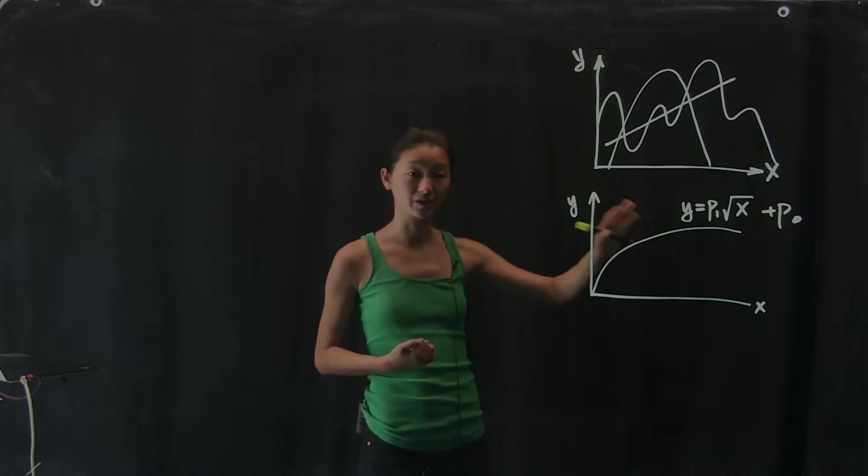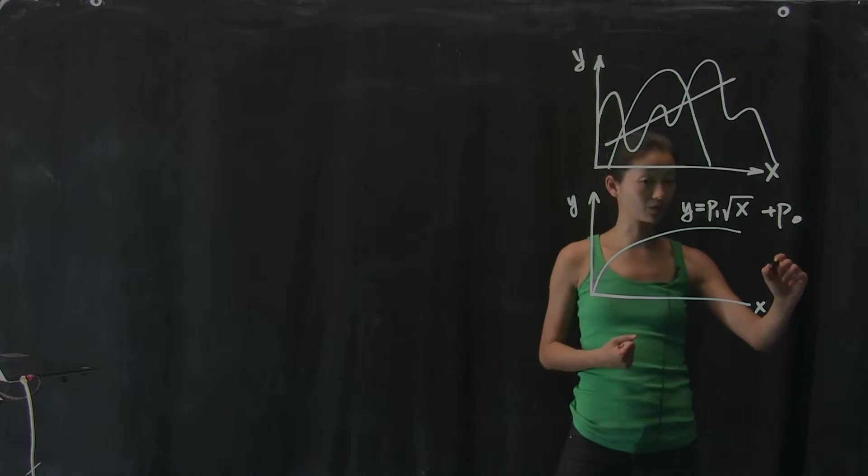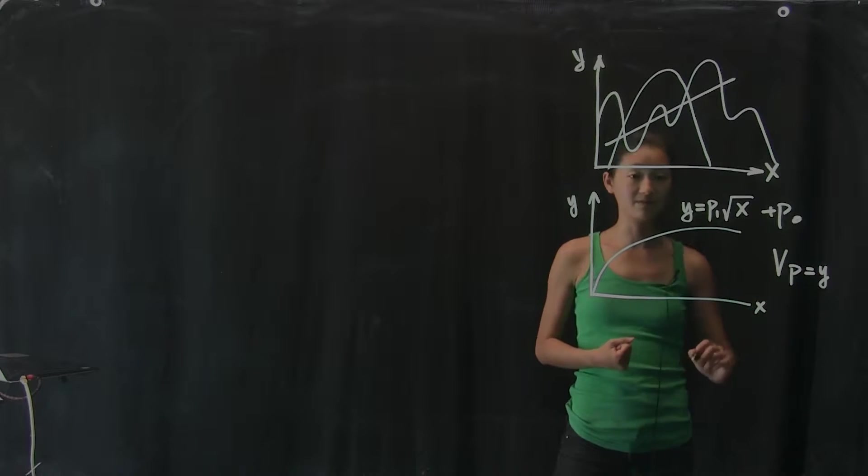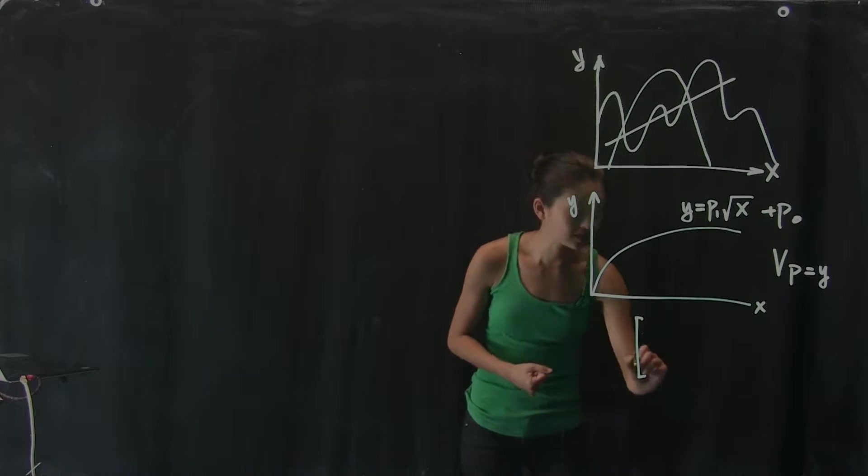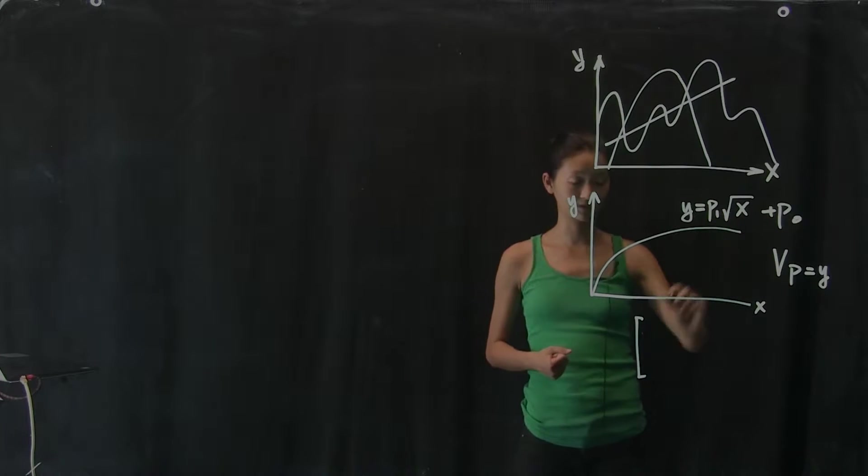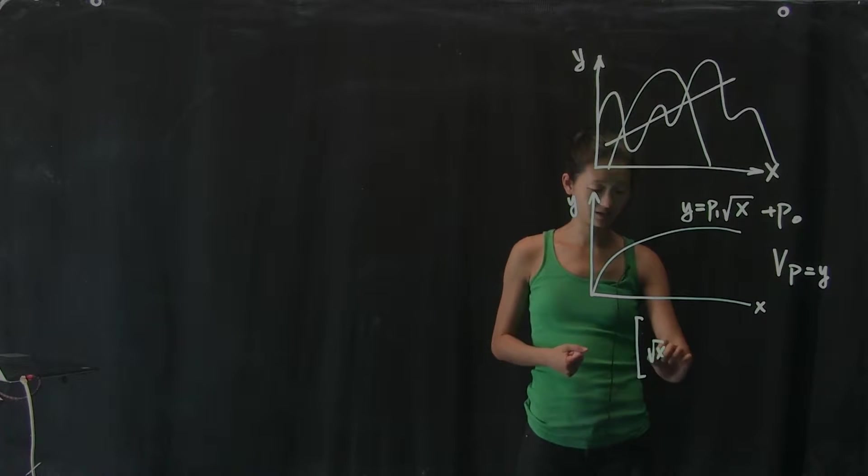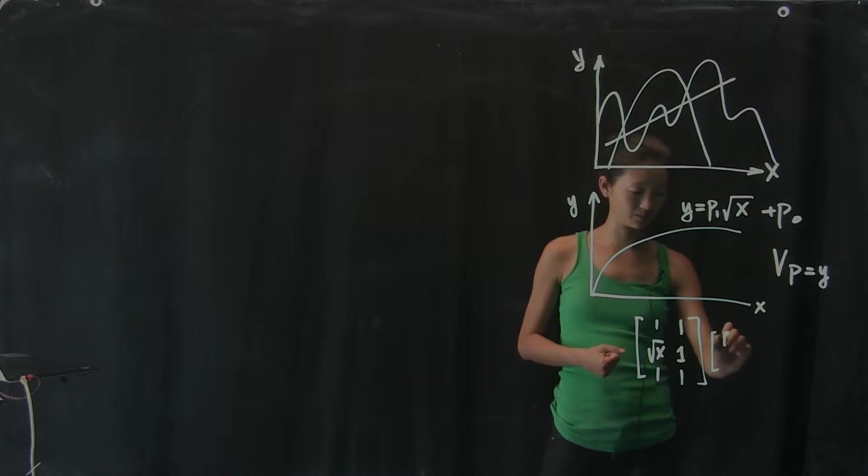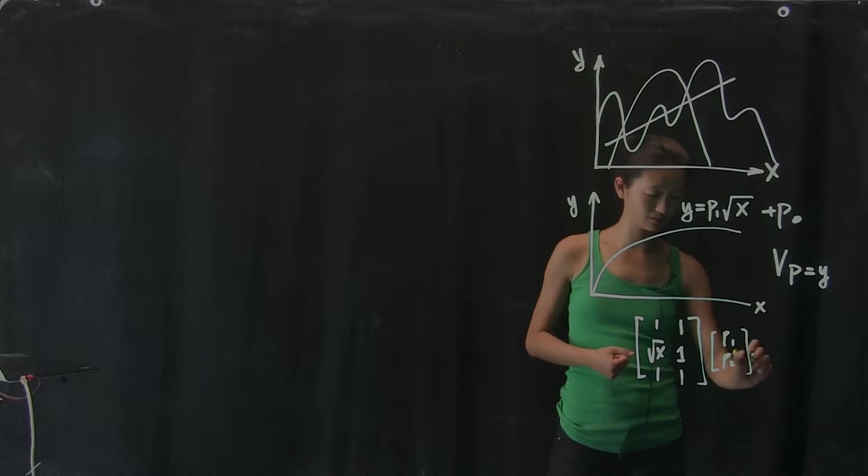And so to be explicit, we can use exactly the same framework to solve this problem by building a v matrix, where in this case, the first column of the v matrix is all of my x coordinates, square root of it, and then a column of ones, just like before. So this gives me p1 and p2 equals y.